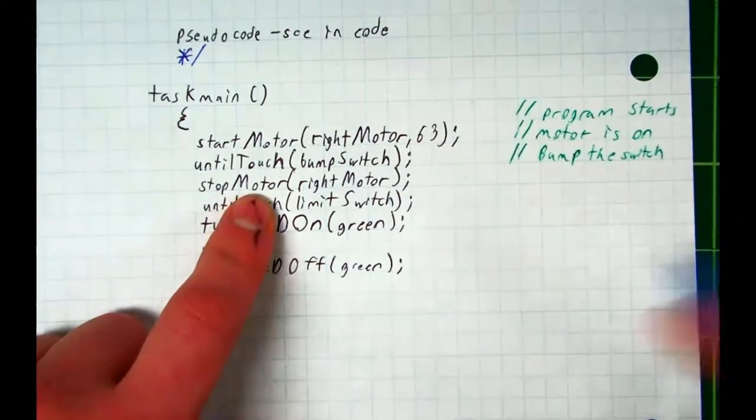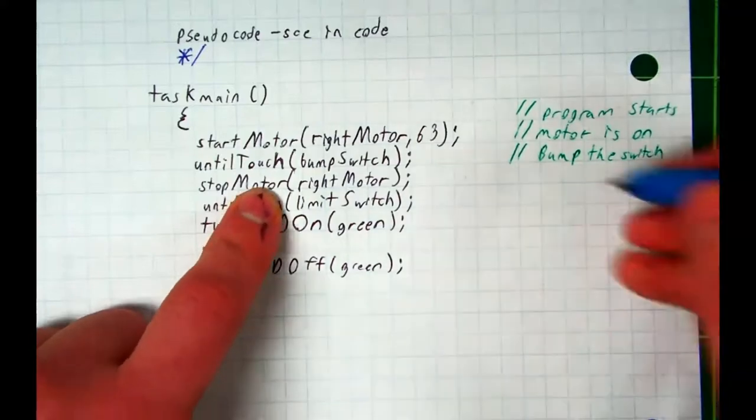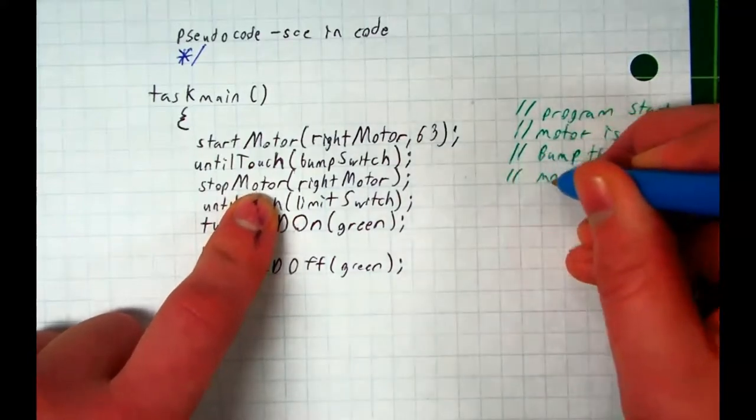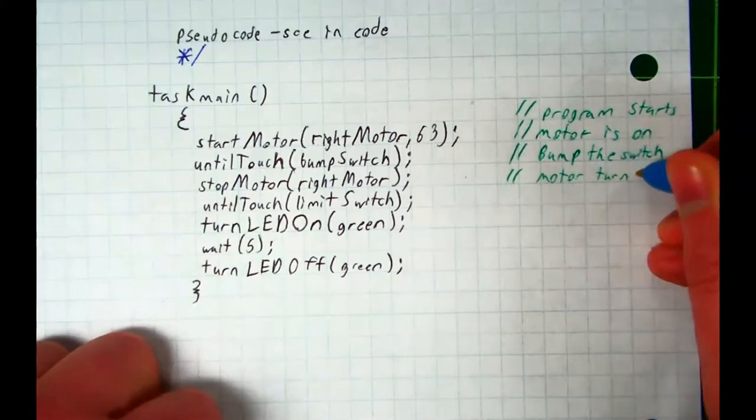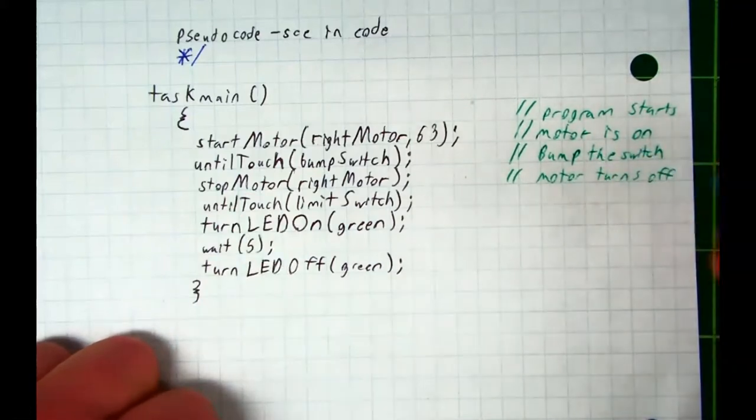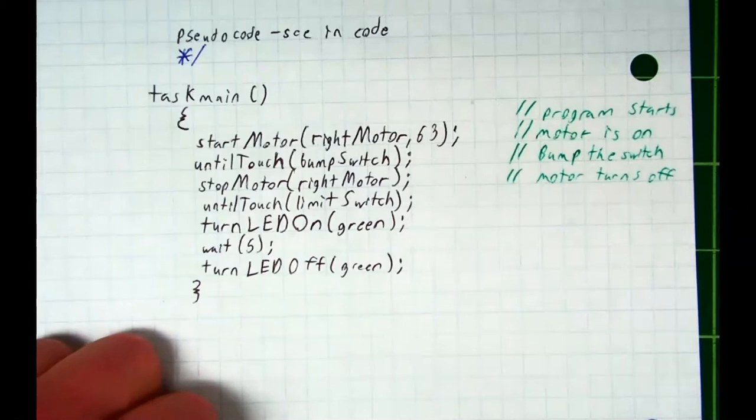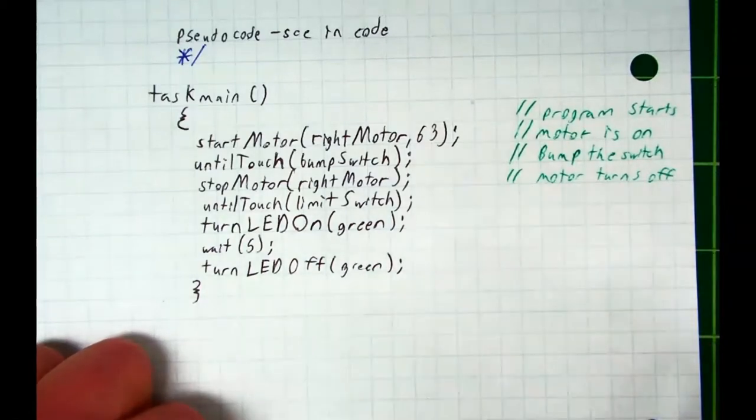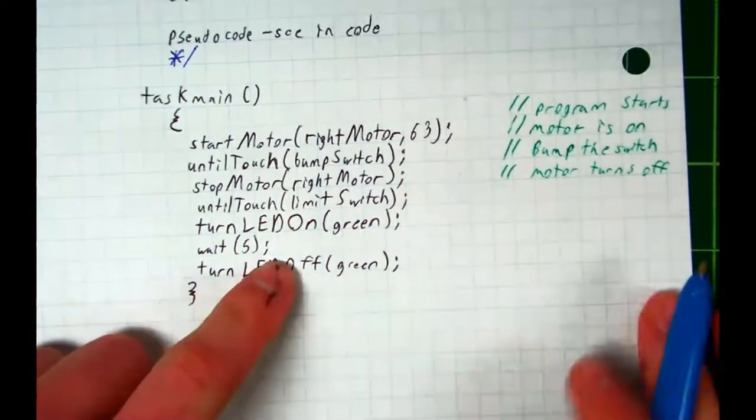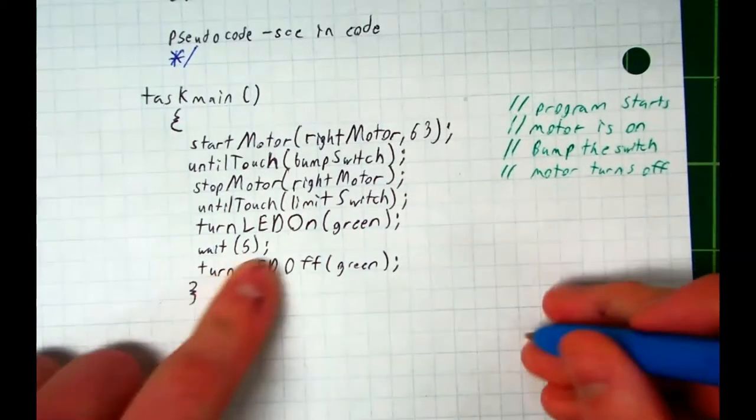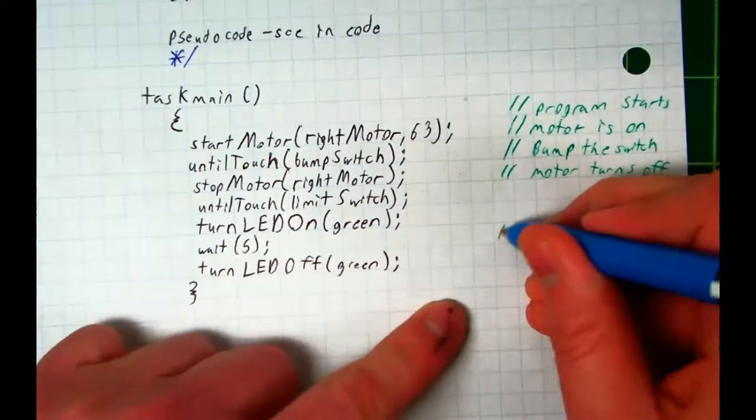And then stopMotor—what does that do? Yeah, motor turns off. Now I'm not going to make you translate every single one. I will when you're working in Robot C, but typing it I find it's a little bit faster than handwriting it. I just wanted y'all to get an idea. So let's do one more together. Let's translate wait five. Let's write pseudocode for wait five.